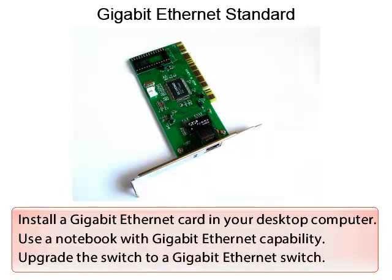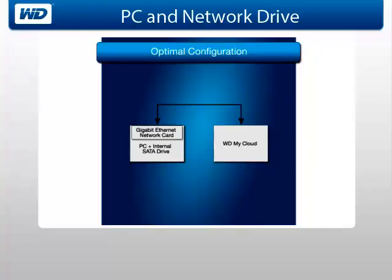Next, we will review five examples of optimal configuration for network drives such as MyBook Live or the WDMyCloud. For our first example, you may install a gigabit ethernet card in a personal computer with an internal SATA drive to directly connect a network drive to the personal computer.